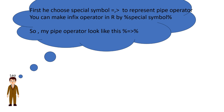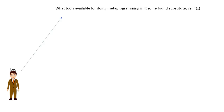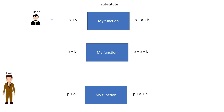To make an infix operator in R, you type a percent sign, then the special symbol, then another percent sign. Leo then looks at the tools available for meta-programming in R and finds the substitute and call functions. Suppose we have the expression x plus y and want to convert it to x plus (a plus b). Similarly, if the user gives a plus b we want to convert it to a plus (a plus b), where only the second argument is replaced — and you can do this using the substitute method.